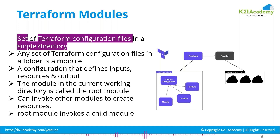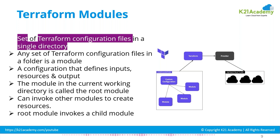For example, you can write one module for creating a network and another module for creating a subnet. The subnet module has a dependency on the network module because a subnet cannot be created without the network — it needs the network ID. That way, all dependencies are handled. You can call multiple modules and have multiple child modules, all according to your requirement.